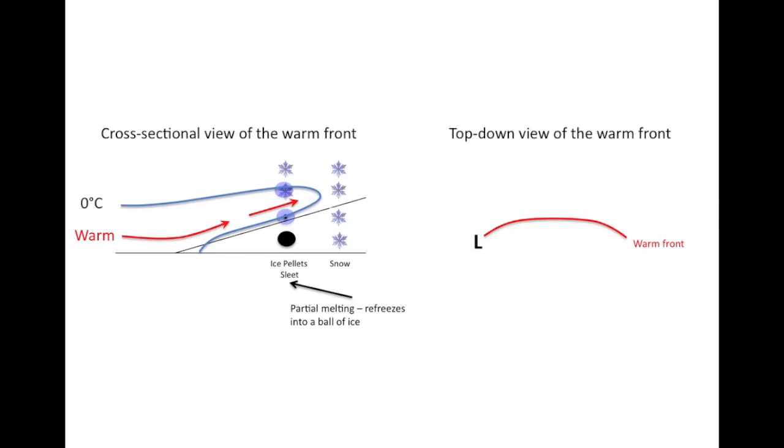Now, if we move just a little bit further to the south, the depth of that warm layer increases in size. Instead of having partial melting, your snowflake now, as it falls into the warm layer, completely melts. And if it completely melts, it turns into liquid.